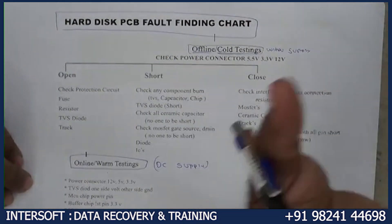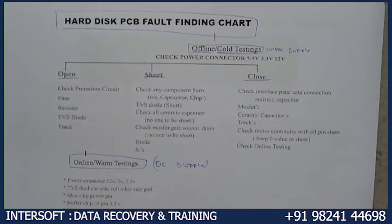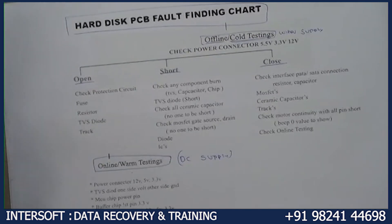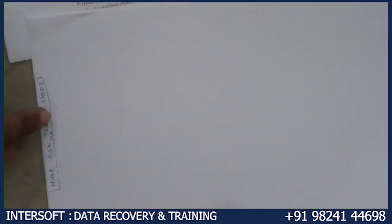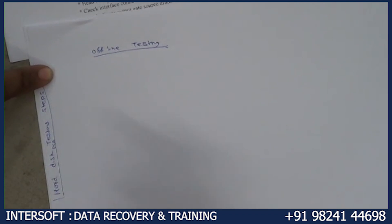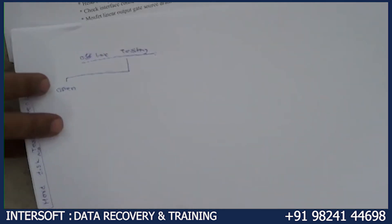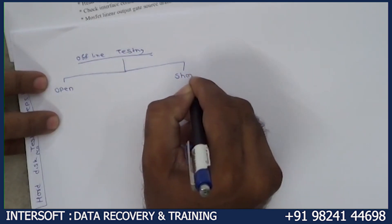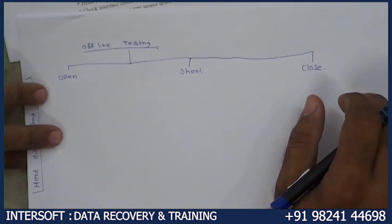Offline means cold testing — without supply we check all the connectivity, whether it is okay or not. We check if the circuit is open or closed. In offline testing there are three conditions: the hard disk line is open, the hard disk line is short, or it is okay. So three conditions: short, open, or okay.